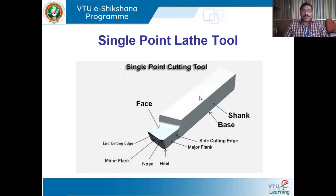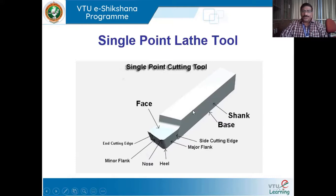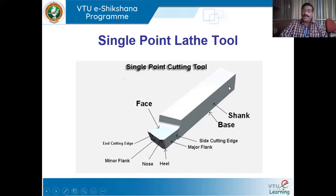The figure shown here is of a single point cutting tool. As explained earlier, every machine tool can have either a single point cutting tool or a multi-point cutting tool. In a lathe we have a single point cutting tool. The material used to make this tool is high speed steel (HSS), and it has a single cutting edge.